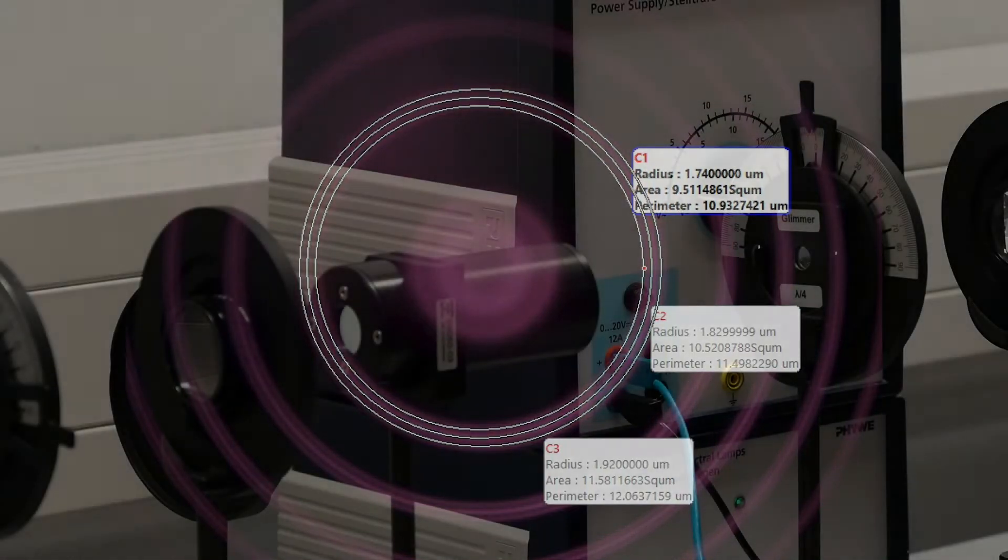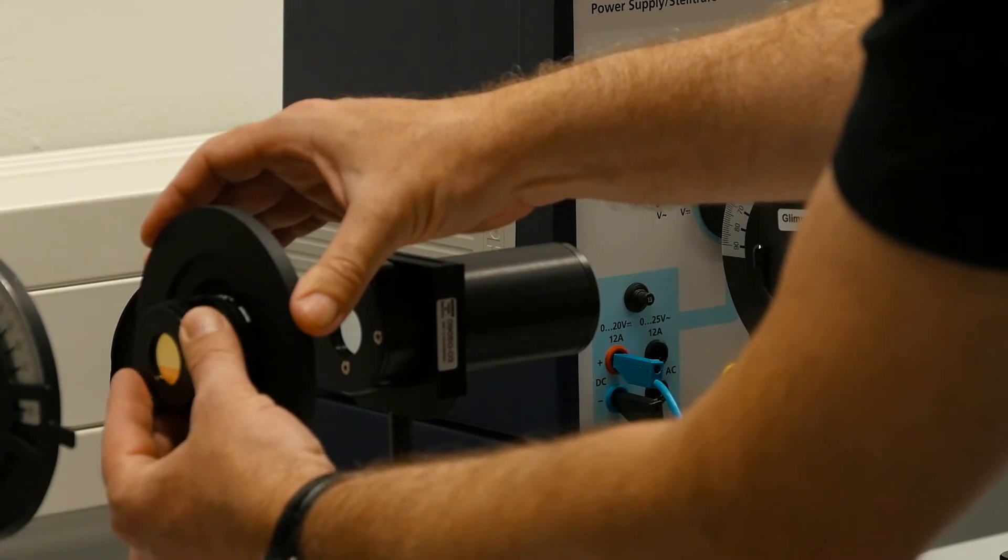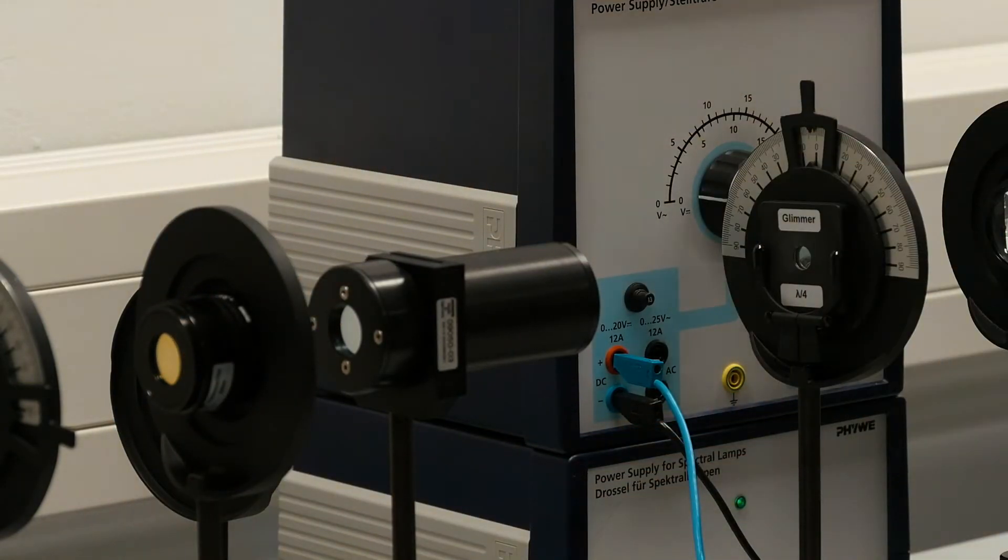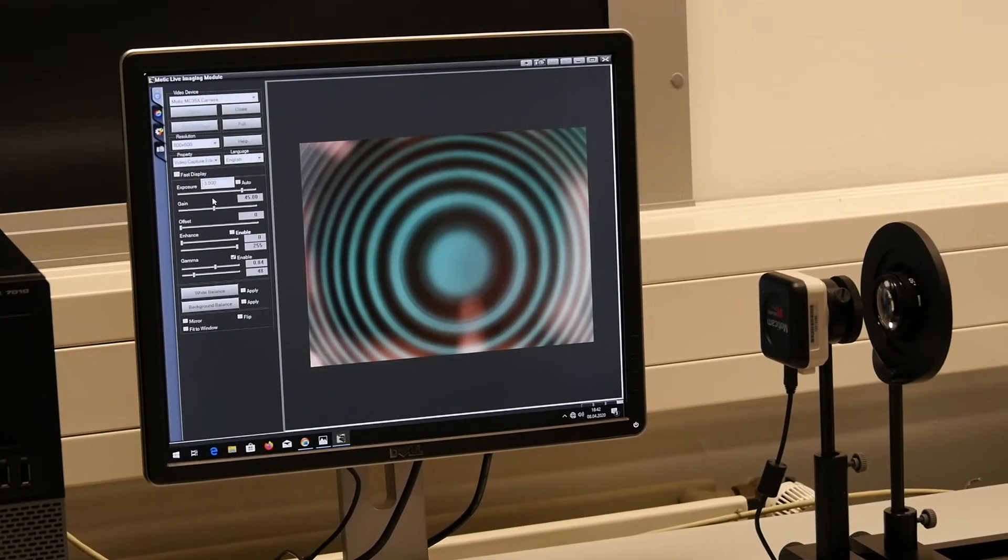Measurement of the anomalous Zeeman effect. Remove the red filter and place the interference filter on the lens attached to the left of the interferometer. In order to better distinguish the rings from each other, place a polarizing filter between the lenses in front of the camera.